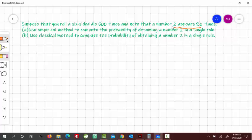The first part: use empirical method to compute the probability of obtaining a number 2. So, empirical method, the probability of an outcome, in this case our outcome, so the probability would be its relative frequency. Probability of obtaining a number 2 would be its relative frequency.